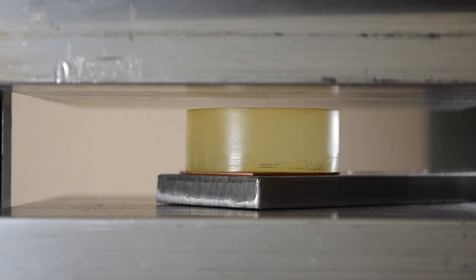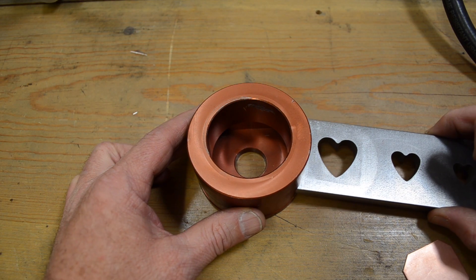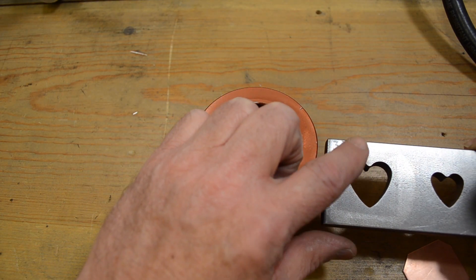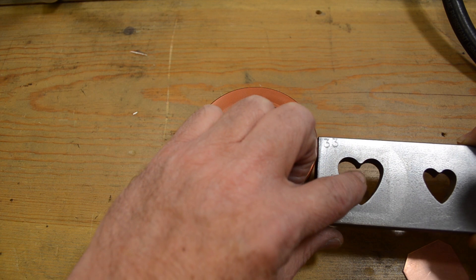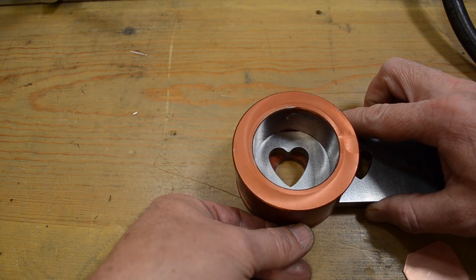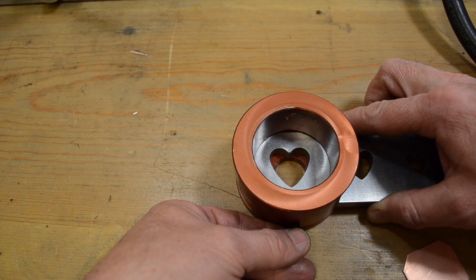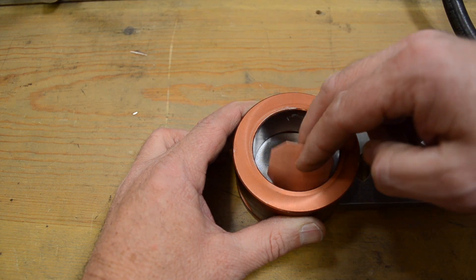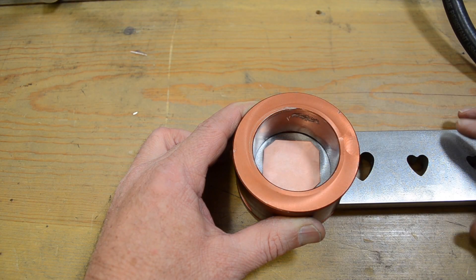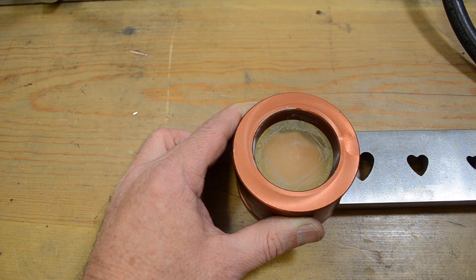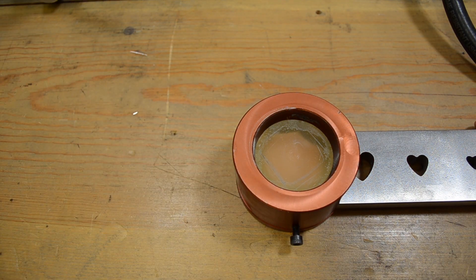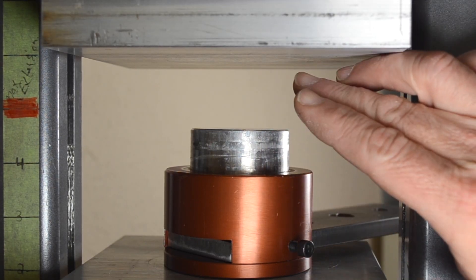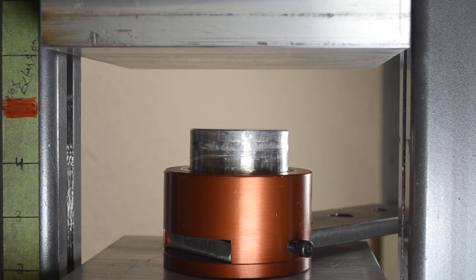So now let's do one in a container. I'm going to load my die into the container. Remember the number needs to be up because this is the side we're pressing our part through. I'm going to align that in the center of my container, tighten up the little set screw there and then drop a piece of metal in and drop my urethane in and then this is the aluminum pusher. Just like before I'm going to make sure that my stack is in the center of my press and I'm going to press.